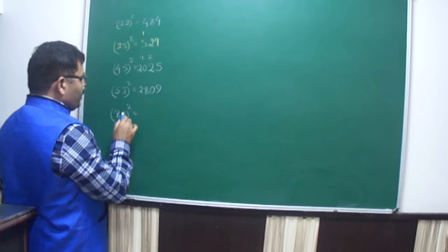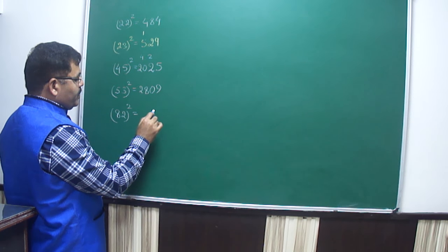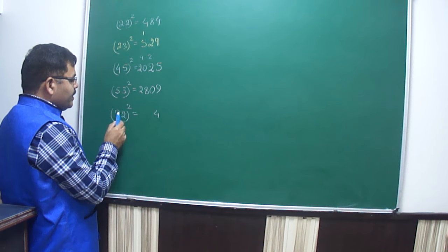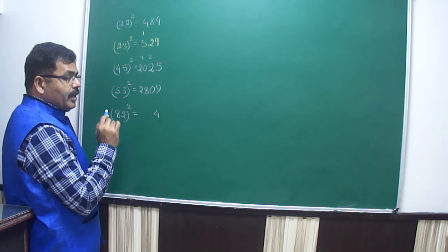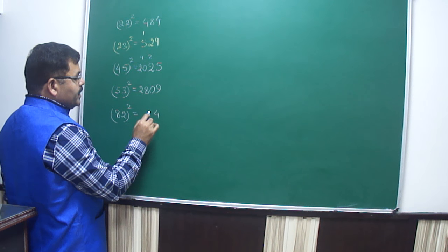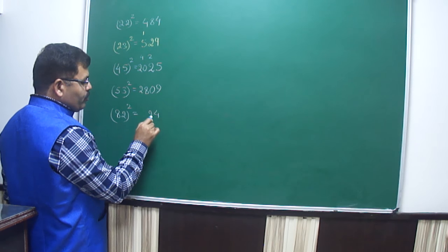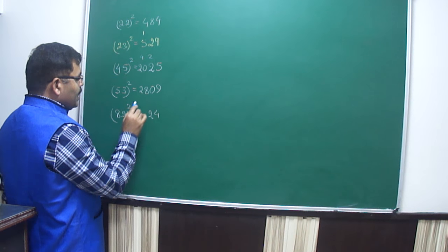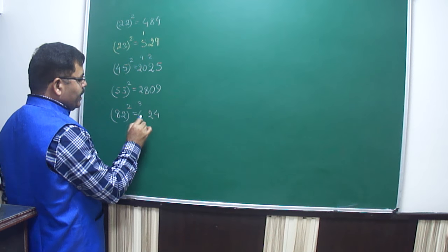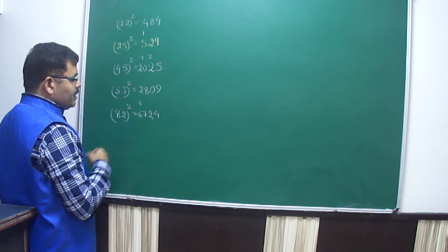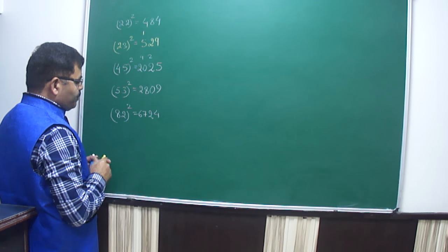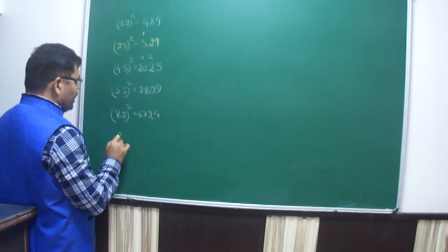Suppose someone has to square 82. 2 squared is 4. Now multiply the digits together: 8 into 2 is 16, double of 16 is 32 — write 2 and carry 3. Then 8 squared is 64, plus 3 carried is 67. So 6724 is the square of 82.